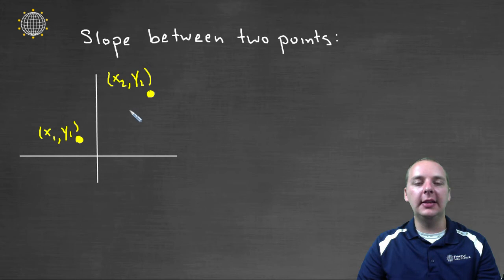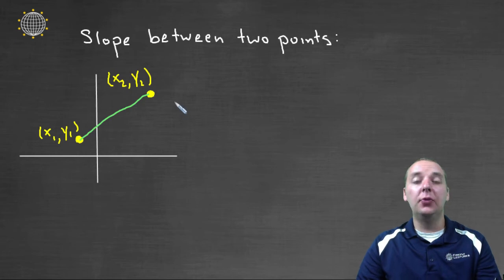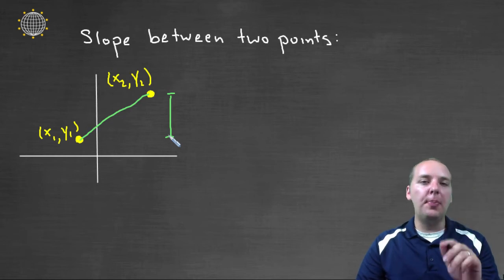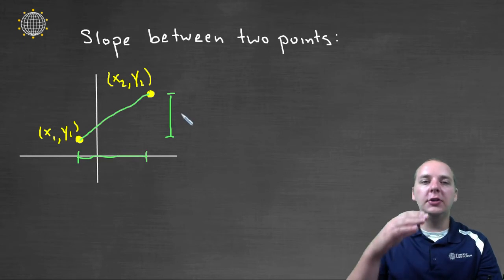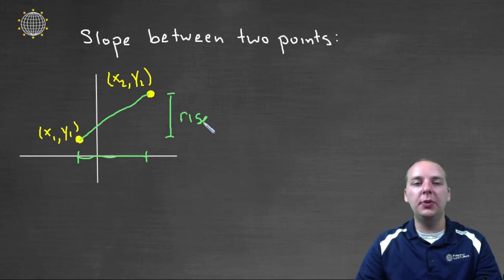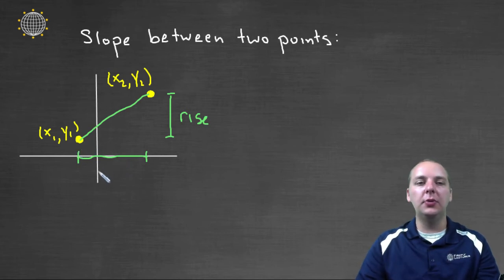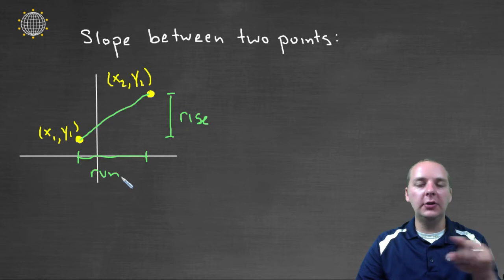Given two points like this, the way we indicate the steepness between these two points is a ratio of how high it goes up from one point to another, compared to how much it goes over from one point to another. We call this vertical change the rise between the two points, and we call the horizontal difference between the two points the run. Run is horizontal, rise is vertical.